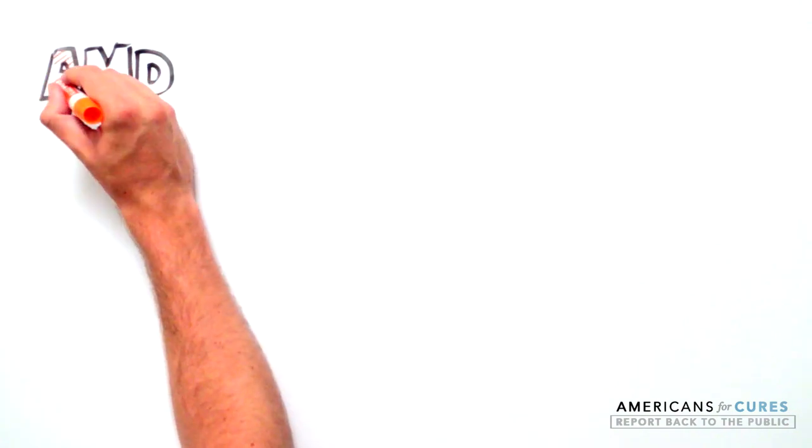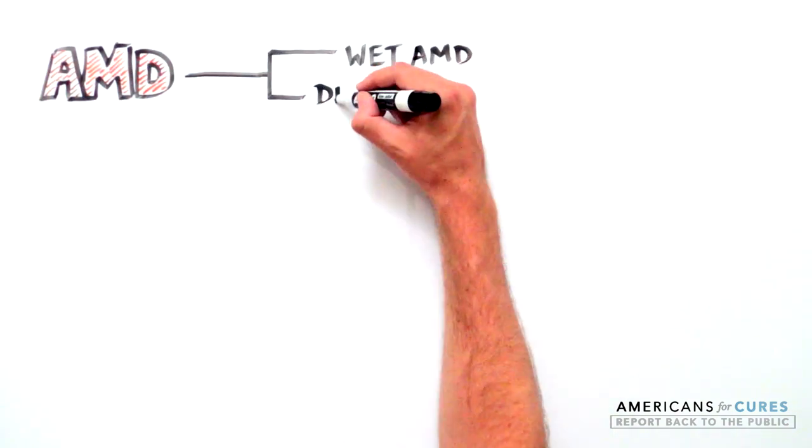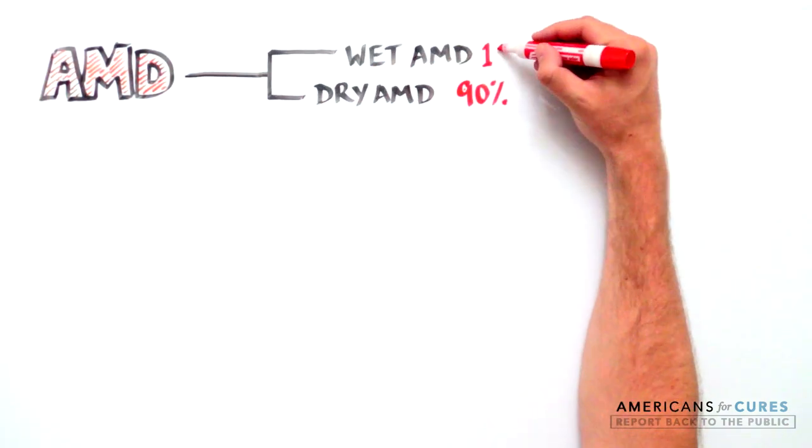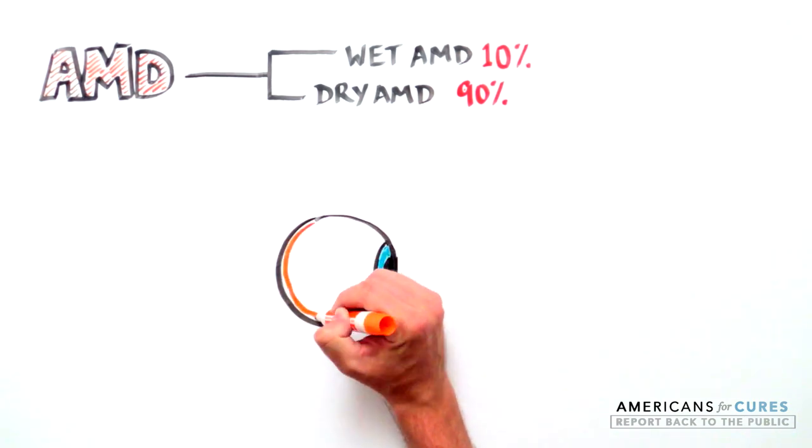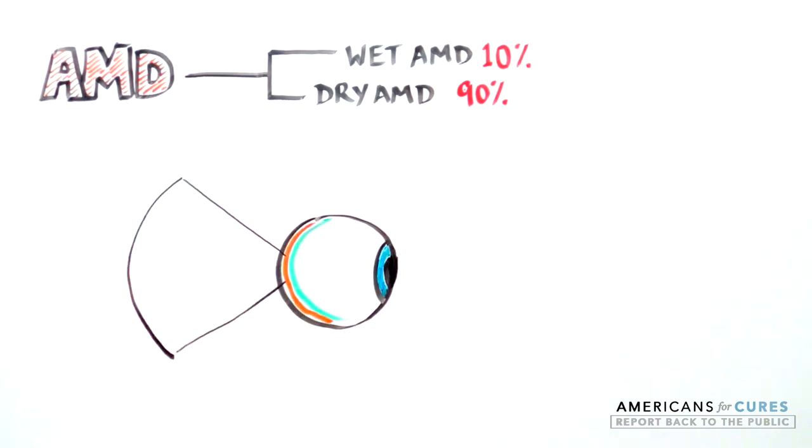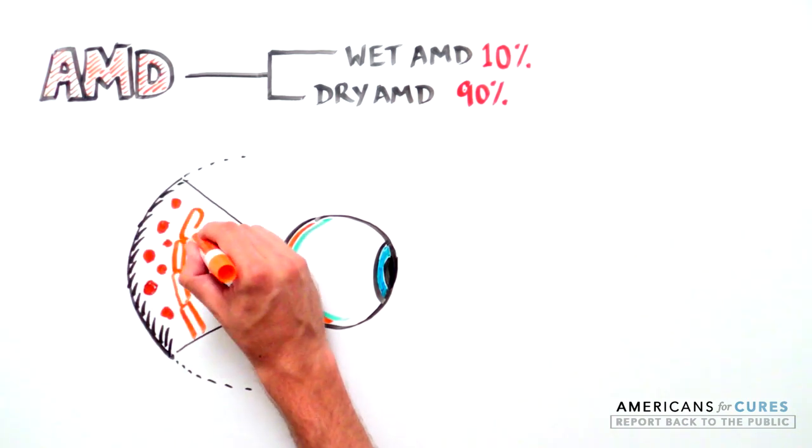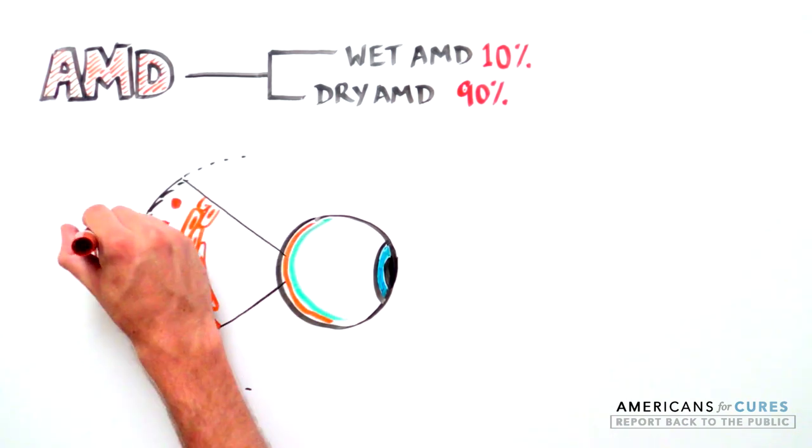There are two types of AMD: wet and dry AMD. Dry AMD affects 90% of patients with AMD. It is caused by a breakdown or thinning of the RPE cell layer and is usually characterized by the presence of small yellow crystalline deposits called drusen.